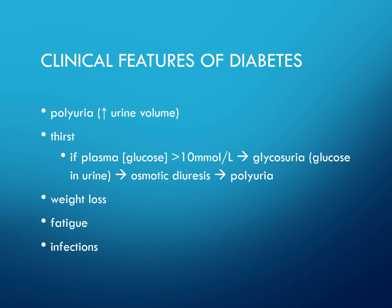Clinical features of diabetes include polyuria and increased urine volume. If the plasma glucose is greater than 10 millimolar per litre, this results in glycosuria — glucose in the urine — then osmotic diuresis and polyuria. There is also weight loss, fatigue, and infections.